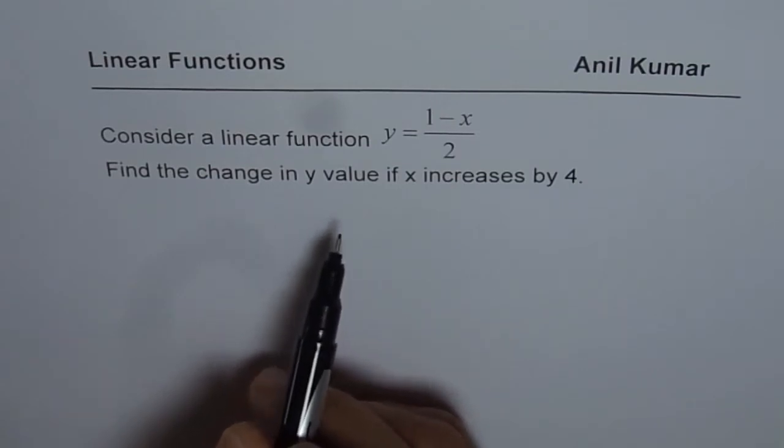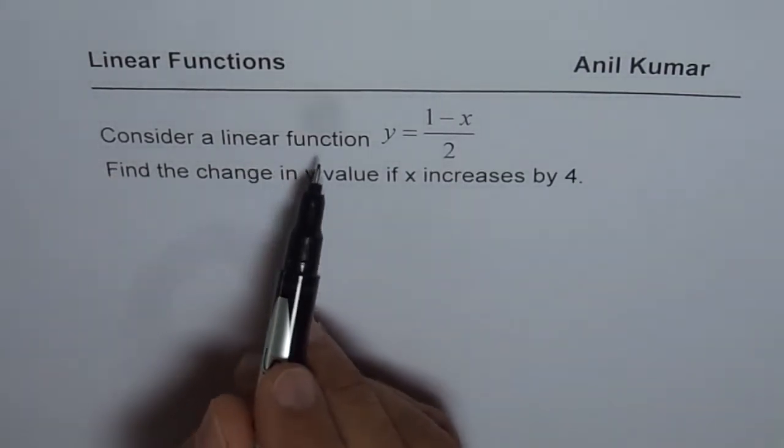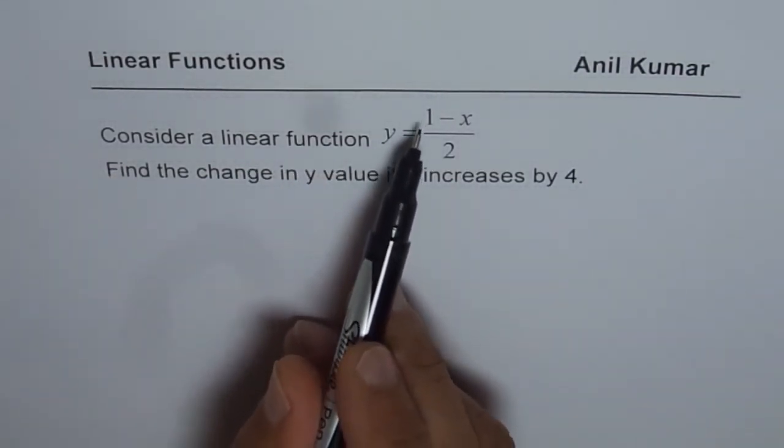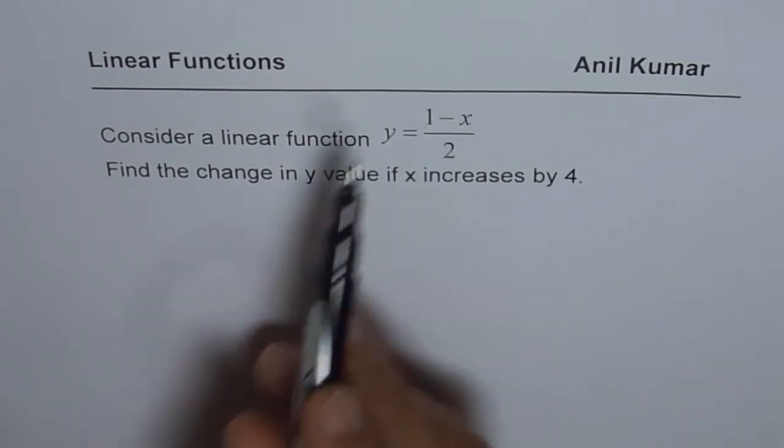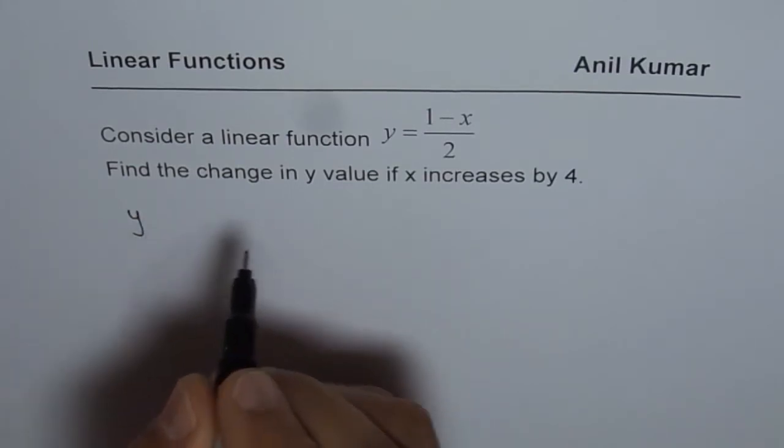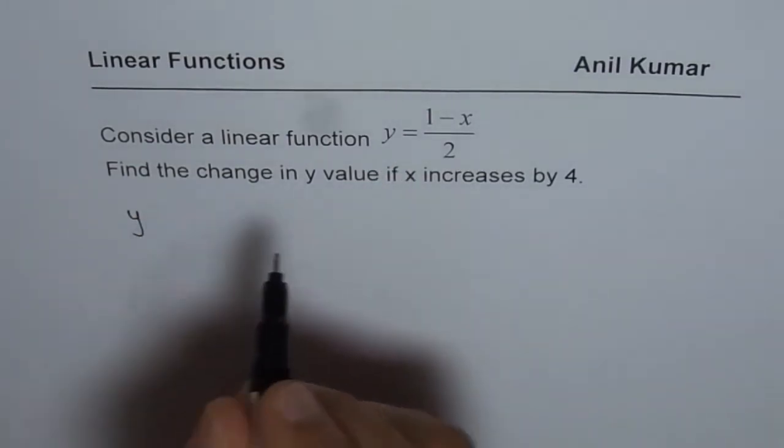Now, let us read the question once again. It says consider a linear function y equals 1 minus x over 2. Let me rewrite this equation in standard form, not the standard, I mean slope and intercept form.